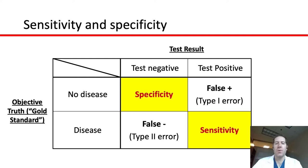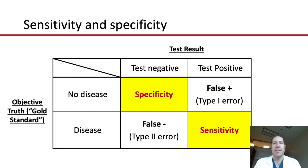Among patients who objectively do not have the disease, if the test results negative, that is the representation of specificity. If a patient does not have the disease but the test is positive, that is a type 1 error or a false positive. On the other hand, patients who have the disease — you want the test to be positive, and if the test is positive, that is the measure of sensitivity. A sensitive test does a good job of detecting patients who truly have the disease. If the patient has the disease and the test is negative, that's a type 2 error or a false negative.